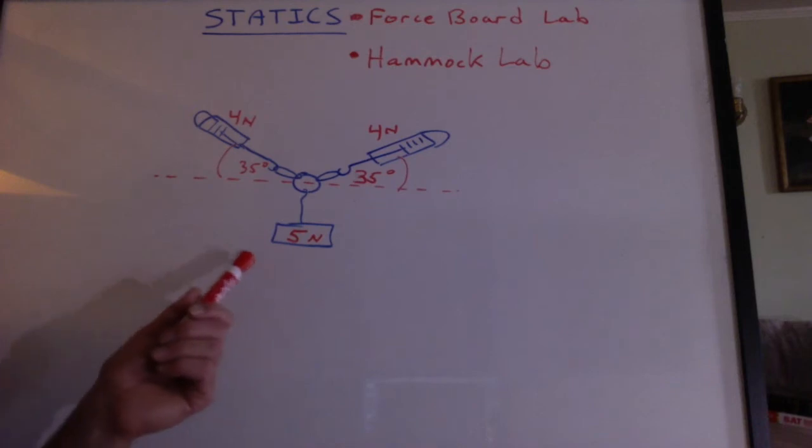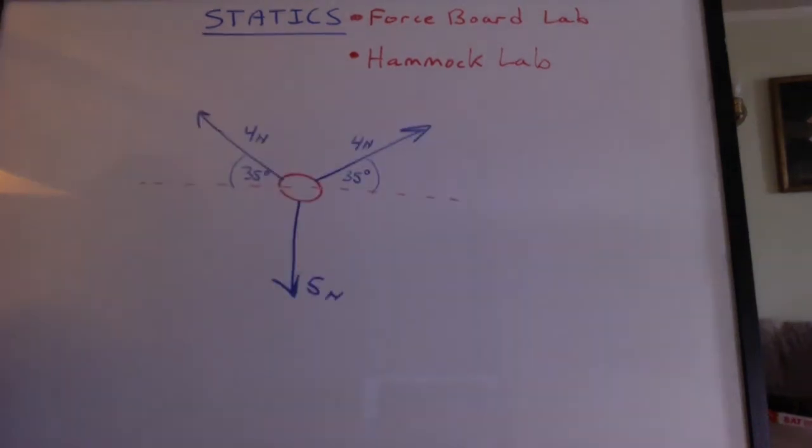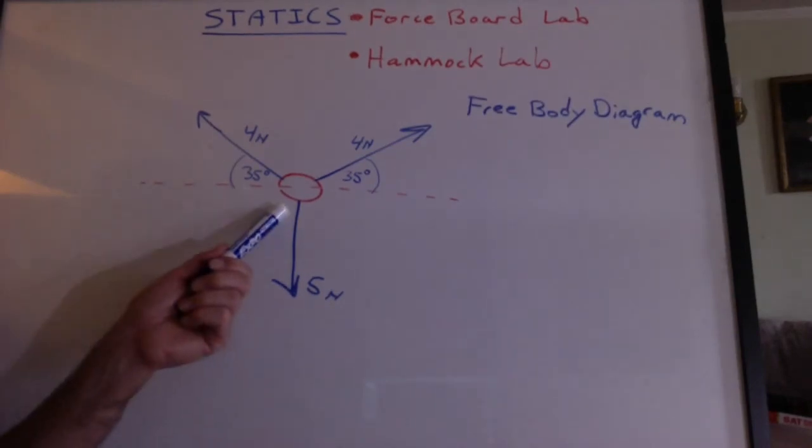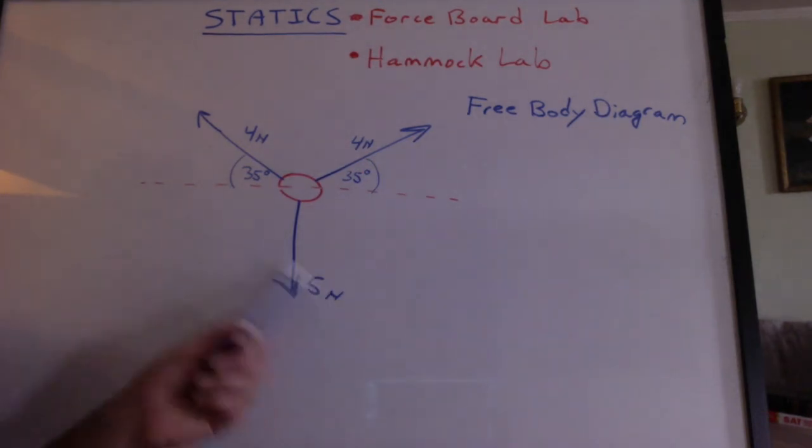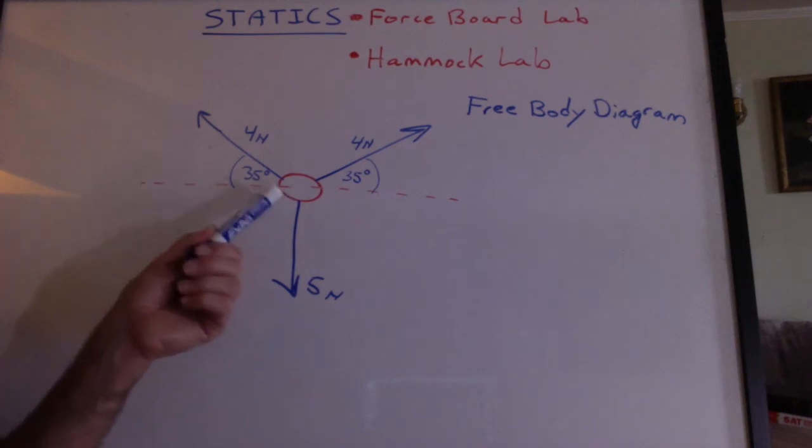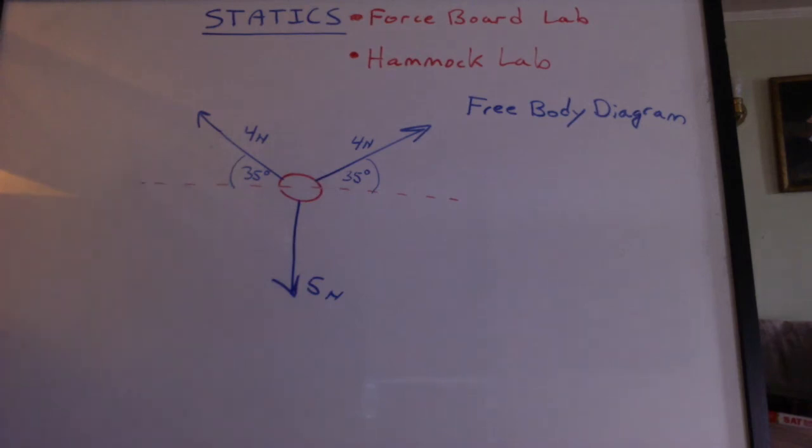So now we'll convert a diagram of the apparatus into a vector diagram that we call a free body diagram. The body is the ring and we imagine there's nothing else on the diagram. We just picture the force vectors acting on it. We only draw the object that we're studying and that's the ring and the forces acting on that ring.